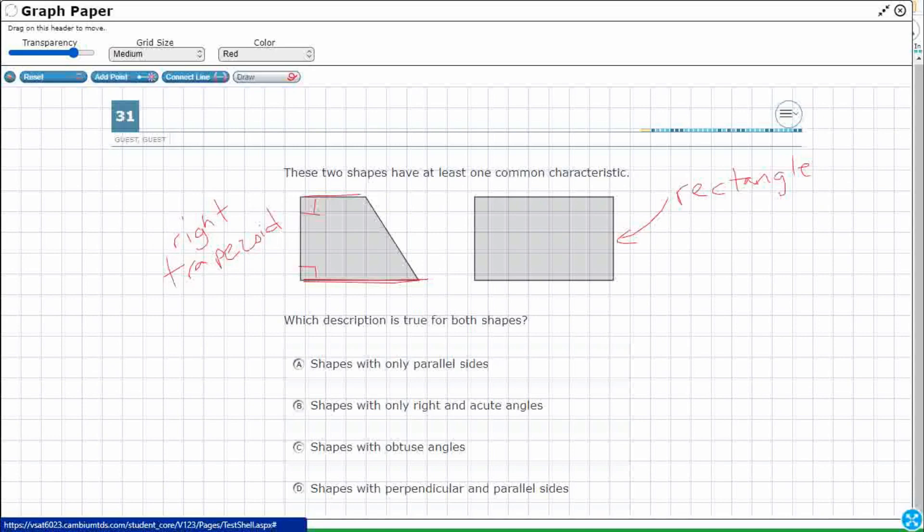When we're thinking of trapezoids, typically we would think of something like this. And this is also trapezoid, but a right trapezoid still has two bases, parallel, but it has instead of two slanted lines, one slanted line and then one perpendicular line.